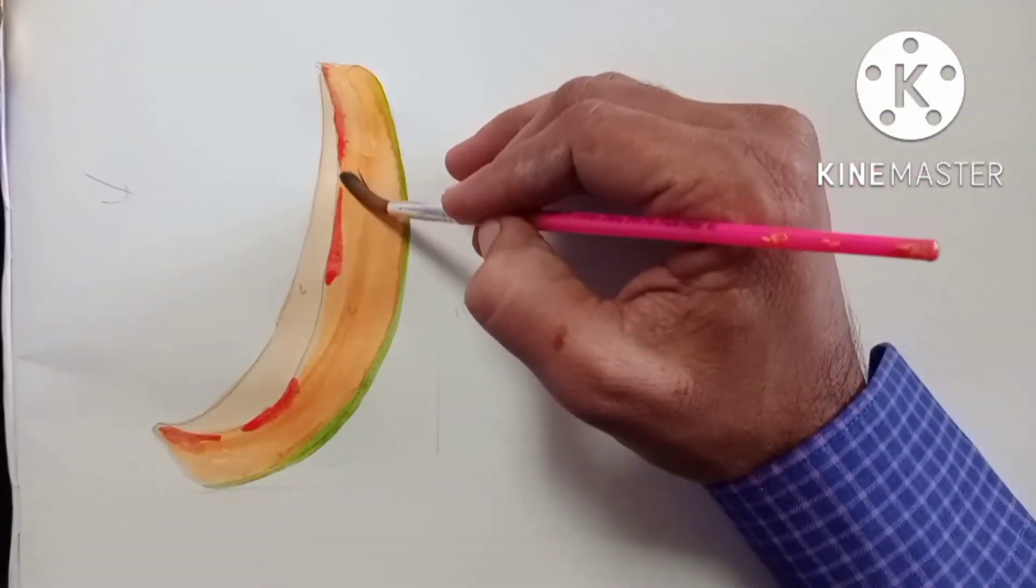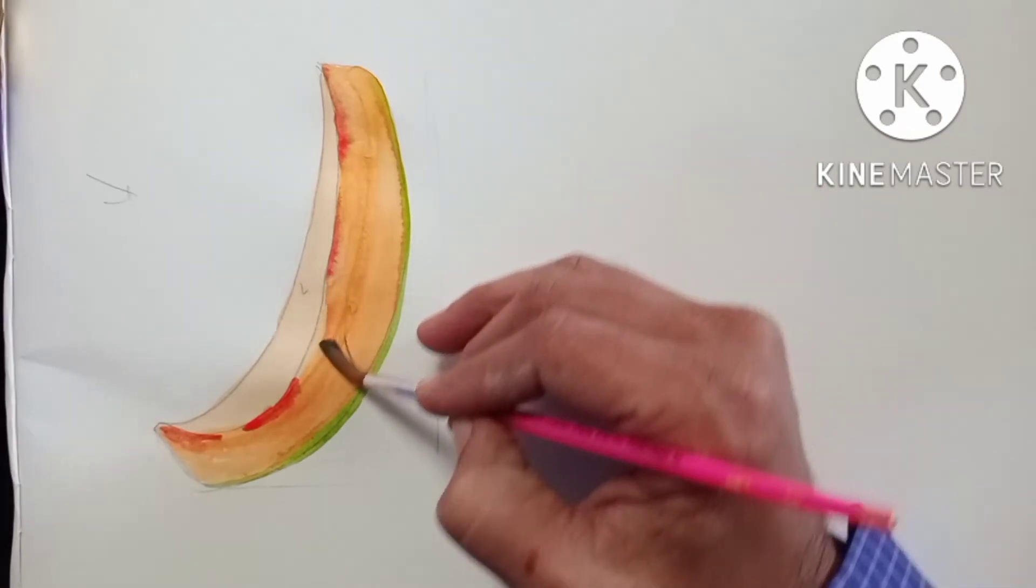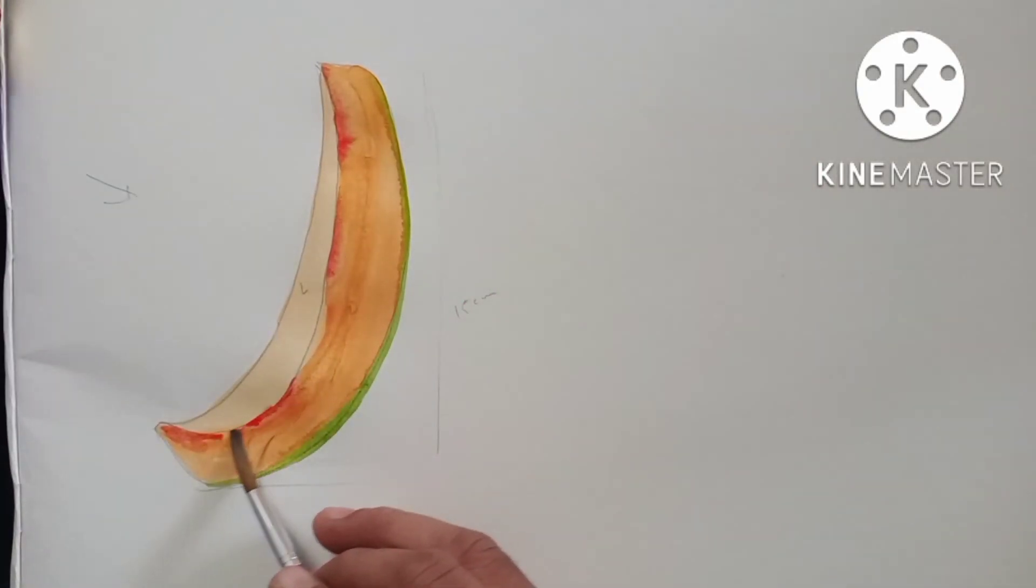The border should not be seen. Dry your brush properly and mix the crimson red properly. Easily we'll get the dark tone and light tone. Now we'll see how to do the shadow.